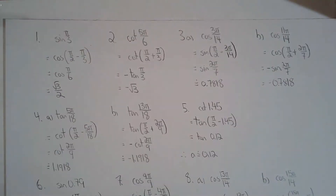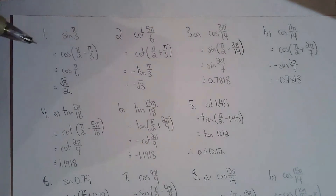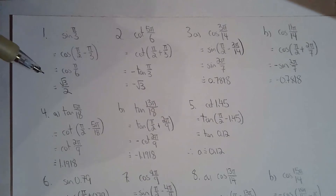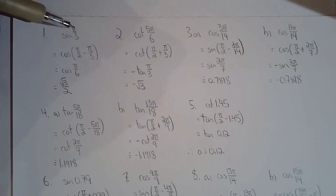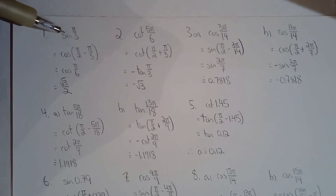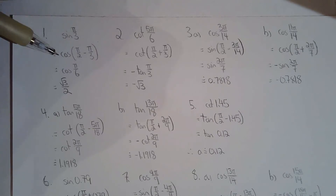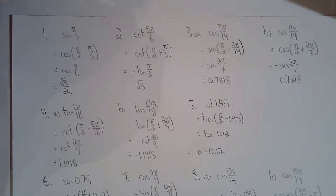For question 1, I'm finding sine of π/3 given that cos(π/6) = √3/2. This is easy because π/3 is in the first quadrant. Find the complementary angle to π/3, which allows you to go from sine to cosine, and the answer is √3/2.